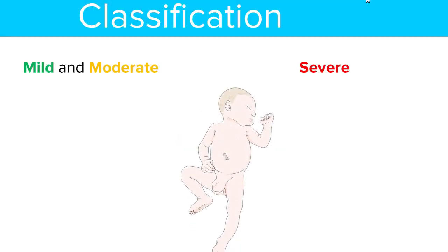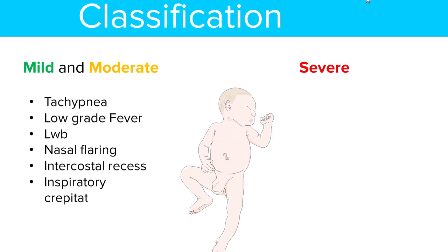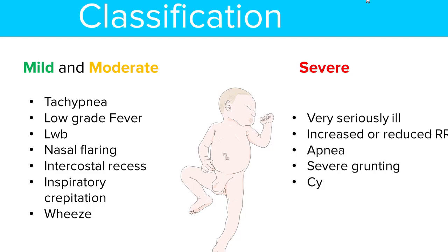Bronchiolitis can be classified as mild, moderate, or severe. In mild to moderate cases, the patient will present with tachypnea, low-grade fever, nasal flaring, intercostal recession, inspiratory crepitations, and wheeze. In severe cases, the patient presents severely ill with increased or reduced respiratory rate, apnea, severe grunting, cyanosis, and difficulty feeding — the child cannot take more than 50% of the presented feed.